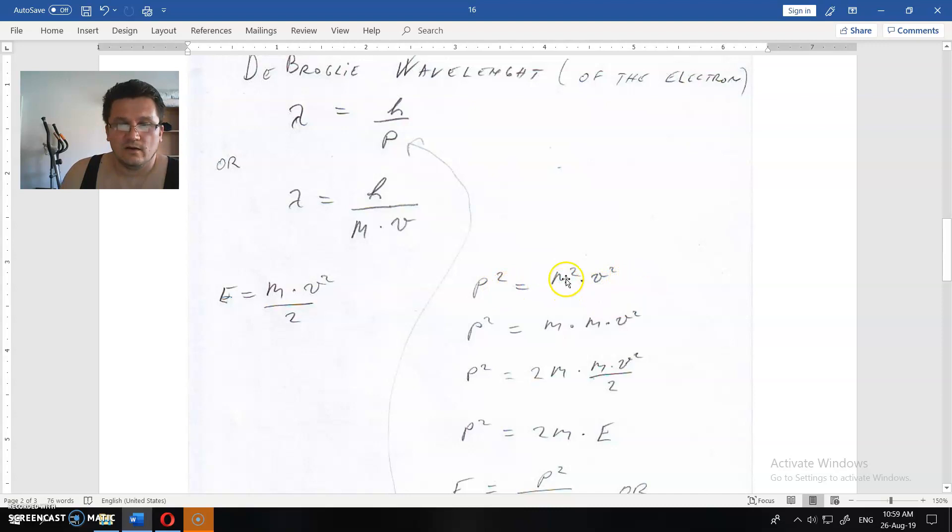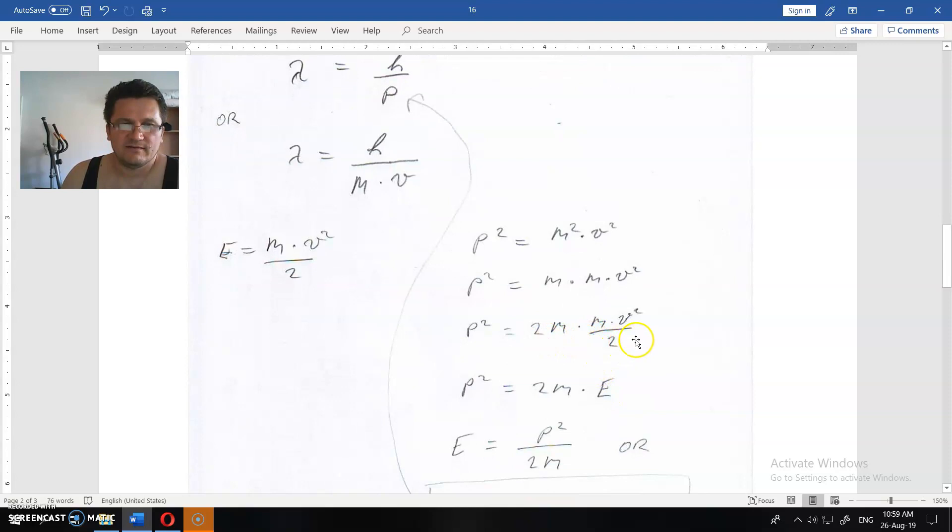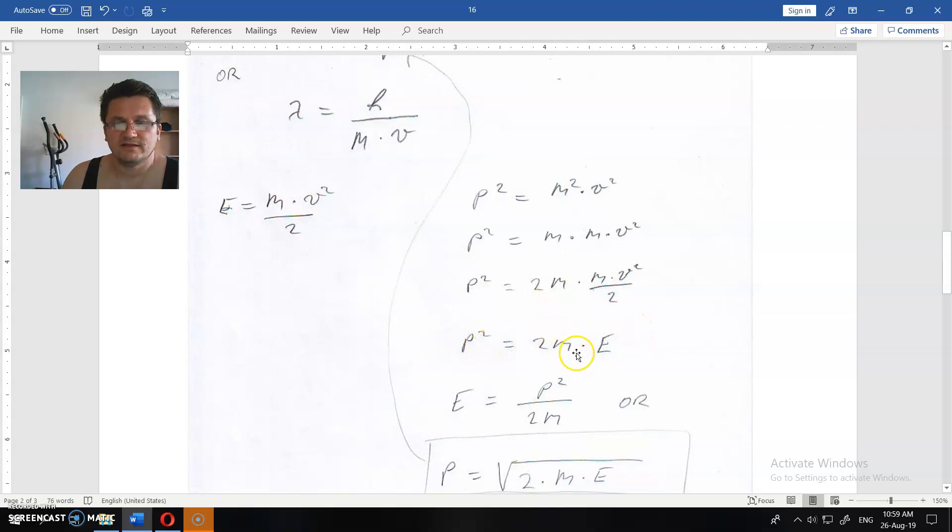This m² we could rewrite as this. Now we could add 2 here and down there. We multiply, divide by, say no, that's nothing. So we will have momentum squared is equal to 2 times mass times E, that is kinetic energy.